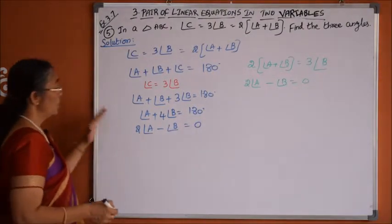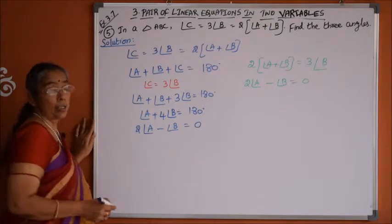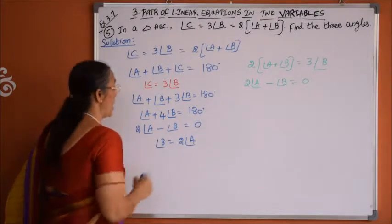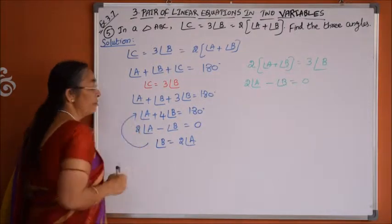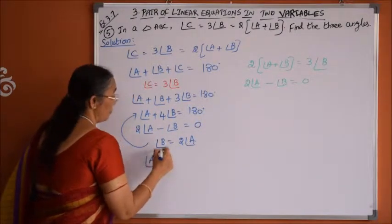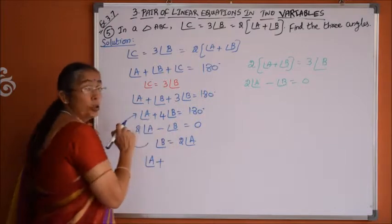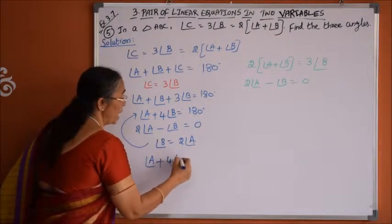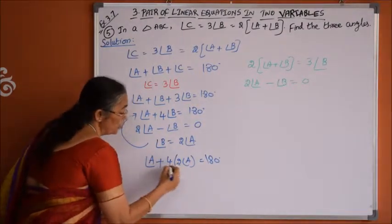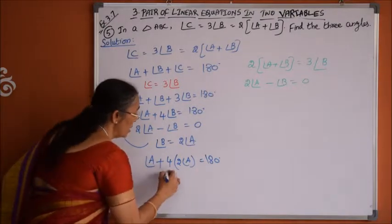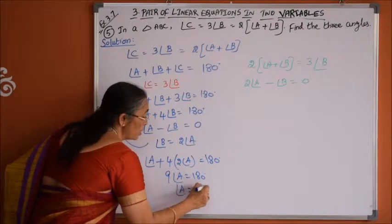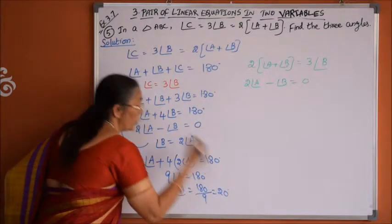We will solve these two equations by substitution method. From the second equation, angle B is equals to 2 times of angle A. Substituting that value of angle B in the first equation, we get angle A plus 4 into 2 times of angle A is equal to 180 degrees. So 1 plus 8 gives 9 times of angle A equals 180 degrees, therefore angle A is 180 divided by 9, which is 20 degrees.